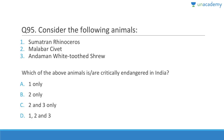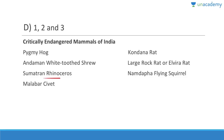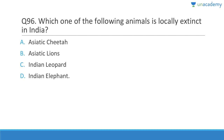Question 95: Sumatran rhinoceros, Malabar civet, and Andaman white-toothed shrew are all critically endangered. Answer is D, 1, 2, and 3. Other critically endangered species in India include pygmy hog, Kondana rat, large rock rat or Elvira rat, Namdapha flying squirrel, along with the three listed.